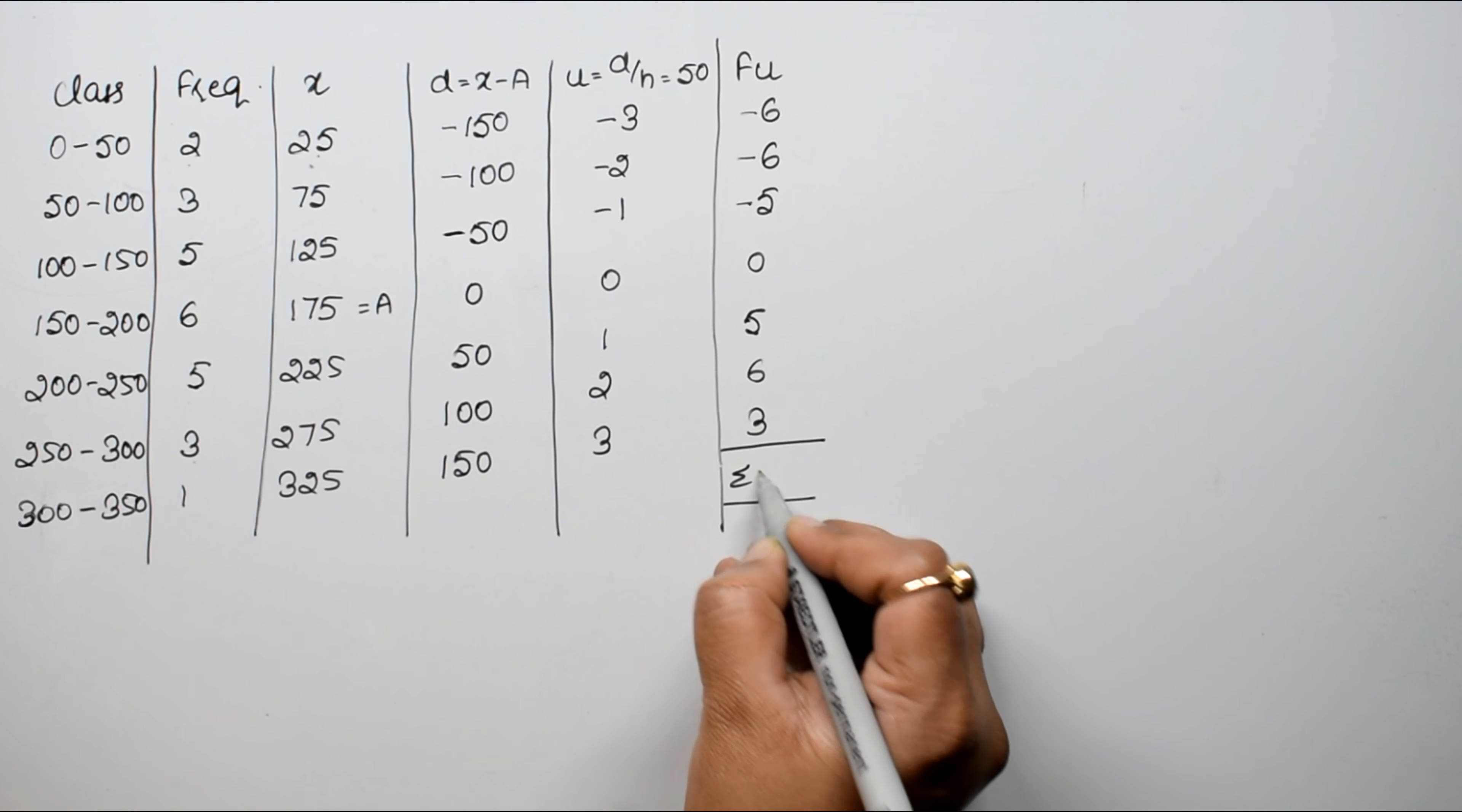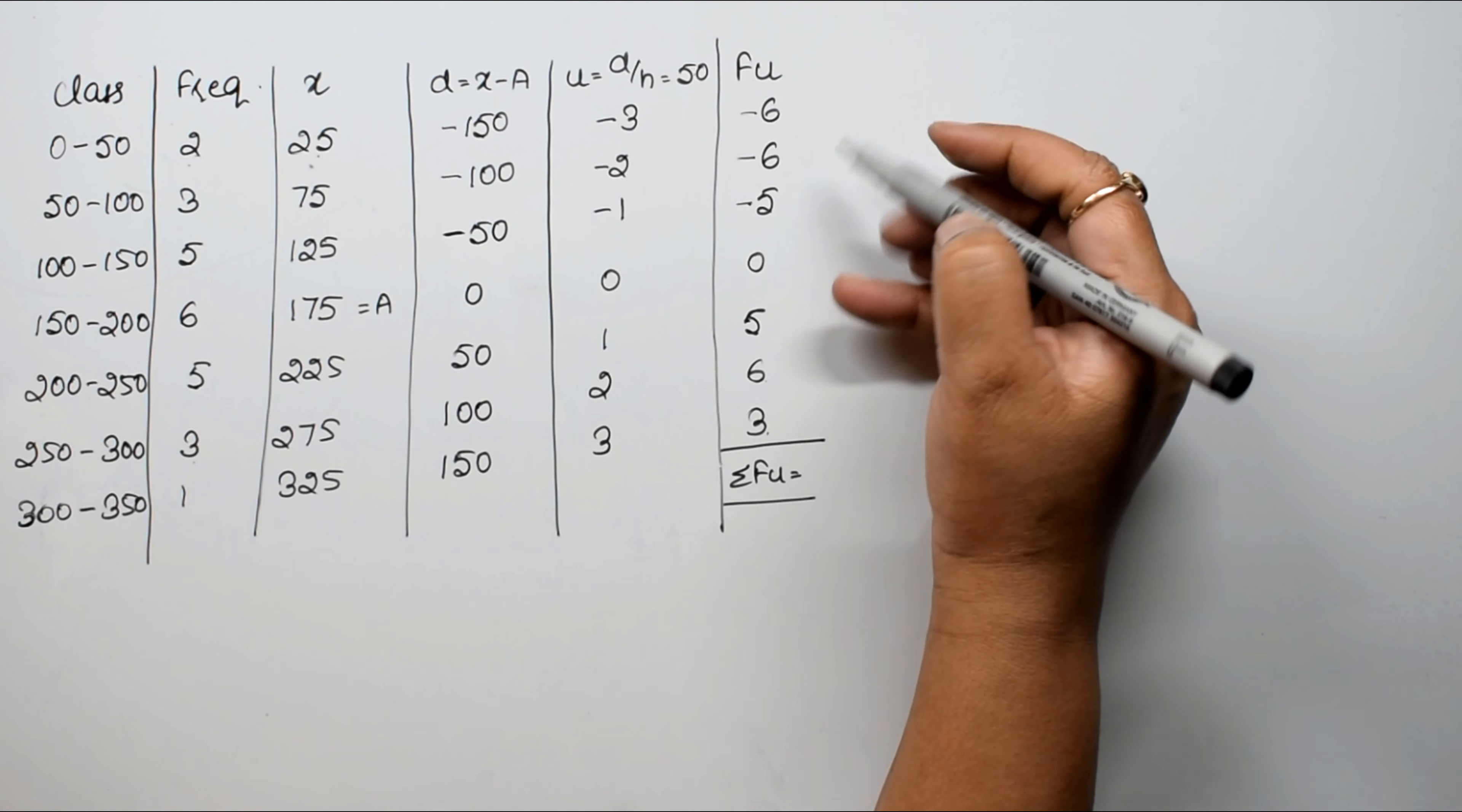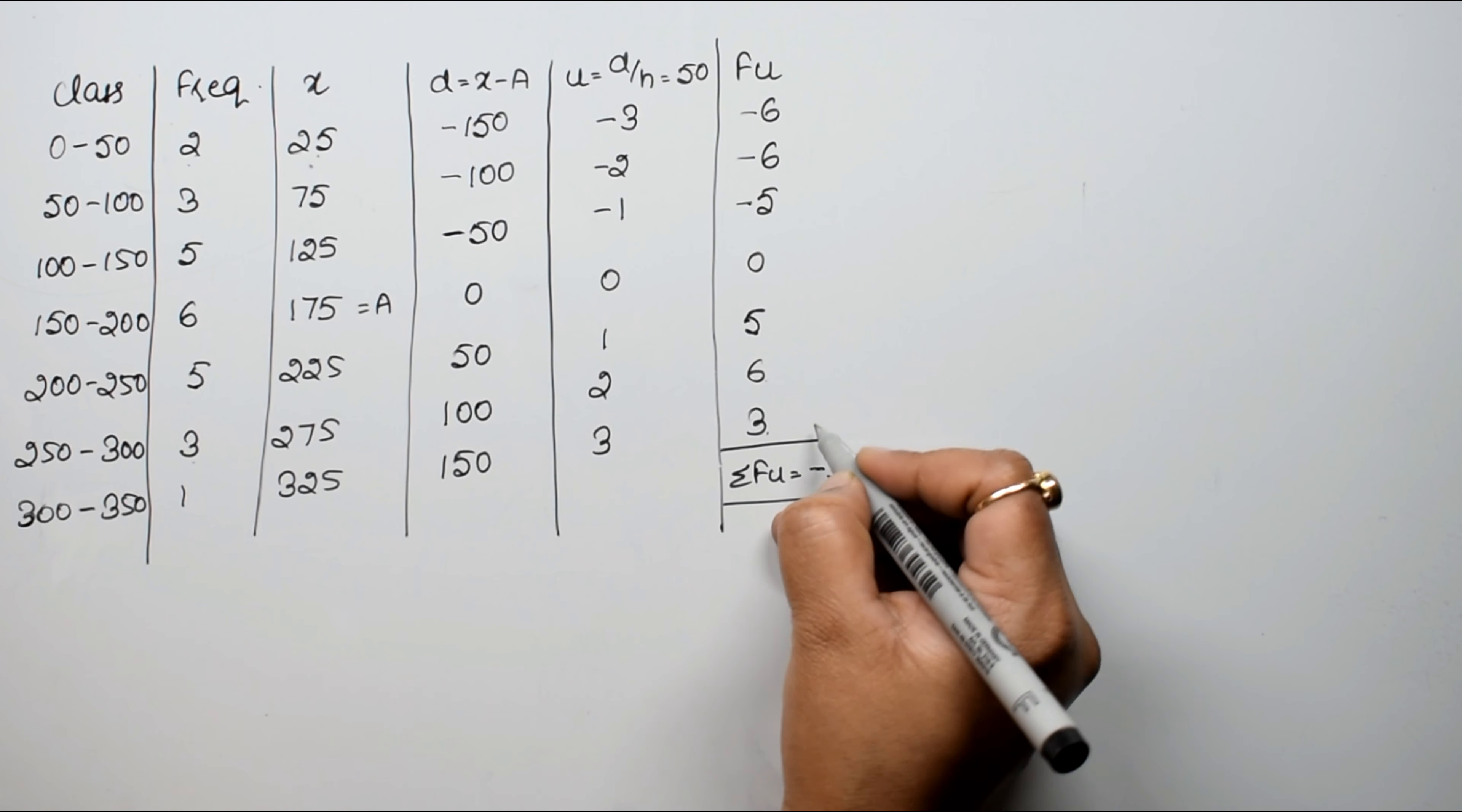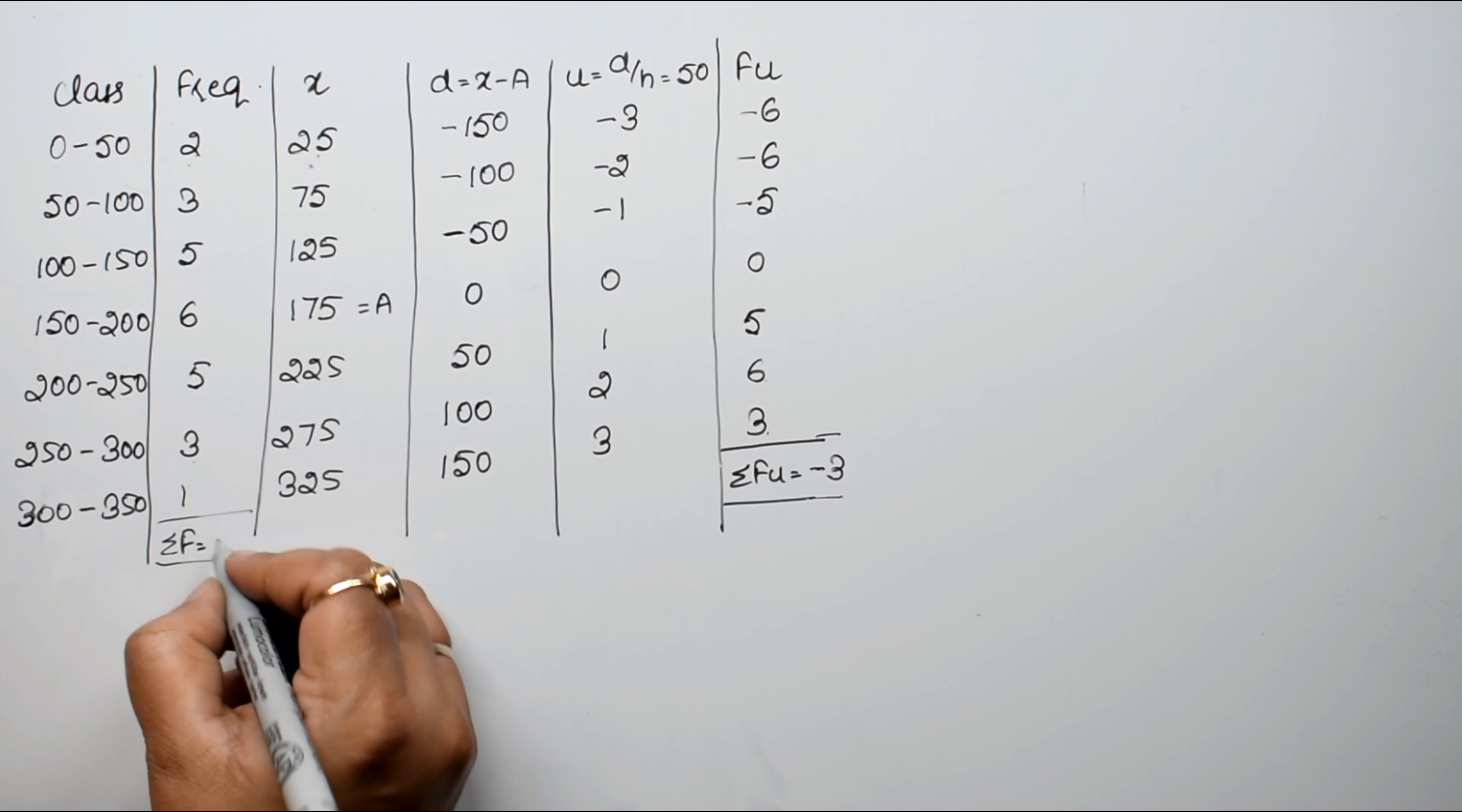So sigma f u kitna aagya humara, that is, see this is 11, 14, and this is 12, 17, so it is 3 remaining, minus ka, because minus ki values jyada thi. Now our sigma f, see this is 10, 16, 19, 20 and 5, that is 25.